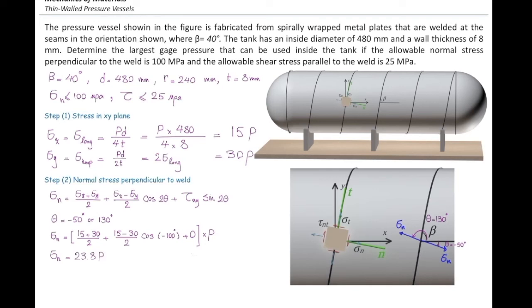So, sigma n would be equal to 23.8p. As we can see, that normal stress is a function of internal pressure. And we know that normal stress is limited to the allowable stress perpendicular to the welding, which is 100 megapascals.